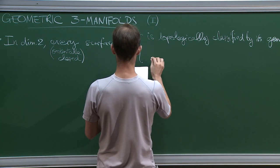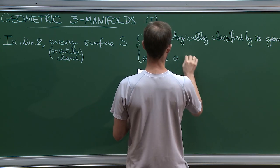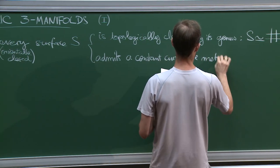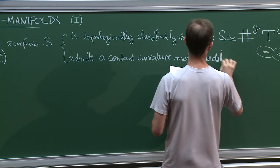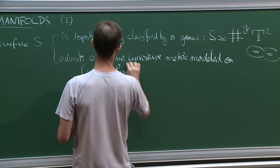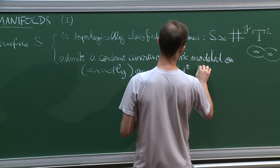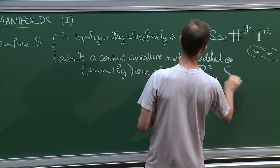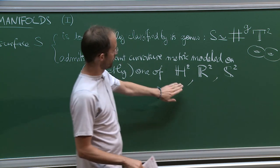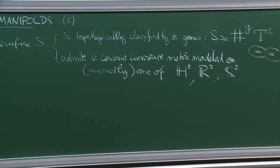So that is all there is in the world of surfaces. And also it admits a constant curvature metric modeled on one of the following exactly one: the hyperbolic plane, the euclidean plane R2, or the sphere S2. In fact, there's just one example here, the sphere, one example here, the torus, and as many examples as genera G are hyperbolic.